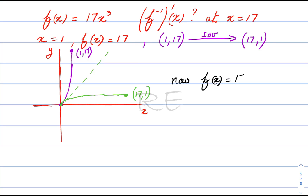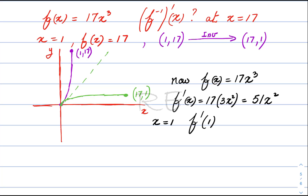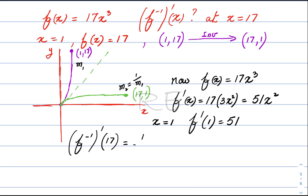Now, f of x is equal to 17x cubed. f prime of x is equal to 17 times 3x squared, which is 51x squared. The slope of the original function at x equal to 1 is f prime of 1 equals 51. Because we swap x for y, the slope of the inverse will be the reciprocal of the slope of the original function at that point. So if m1 is the original slope, m2 equals 1 over m1. Therefore, the slope of the inverse at (17, 1) will be 1 over 51.